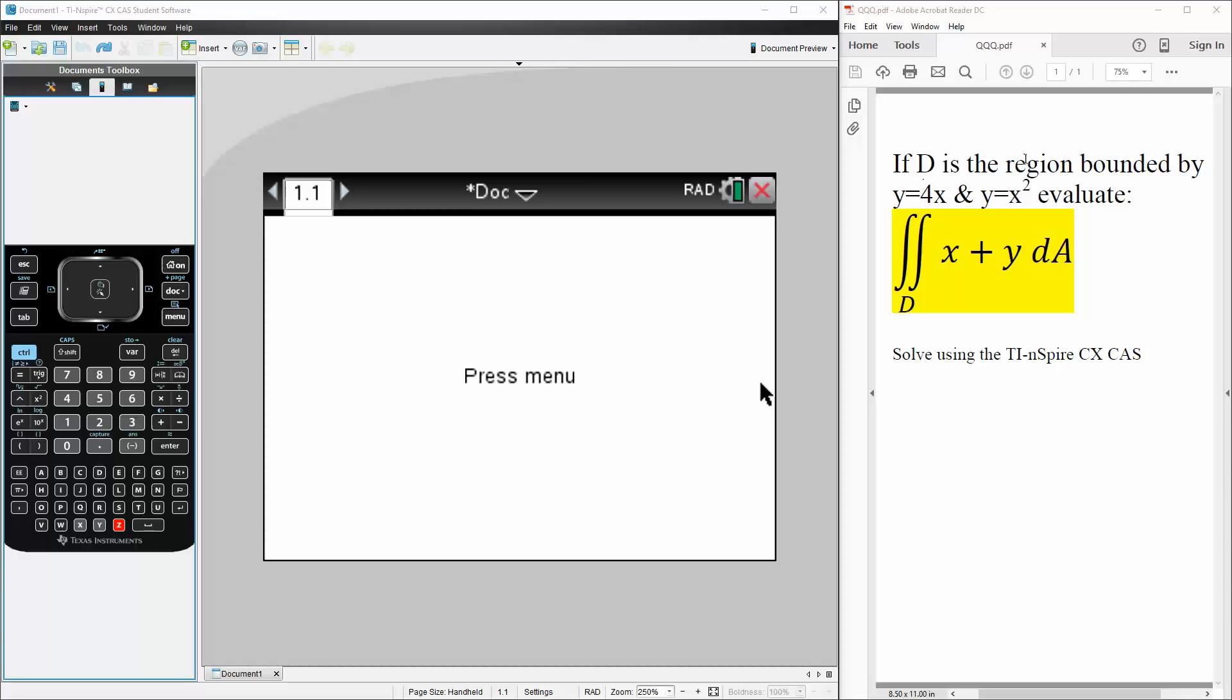Okay, in this problem, if D is the region bounded by y equals 4x and y equals x squared, we want to evaluate this double integral.